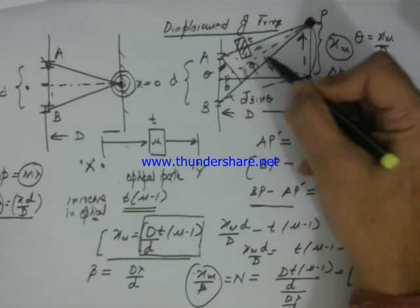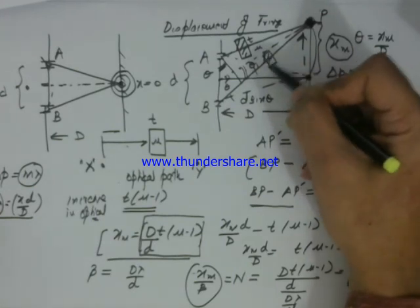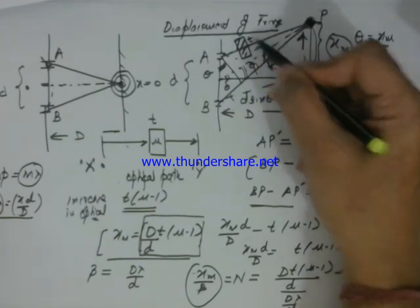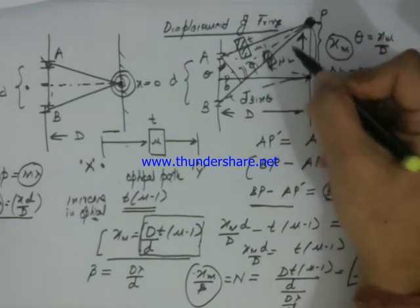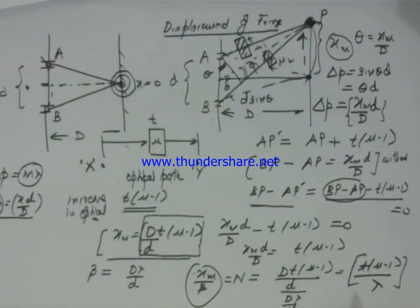You can also have a situation where slab is put in both the paths with thickness t in both and mu 1 and mu 2. We can have a separate lecture on that. This lecture is basically confined to what shift in fringes take place and how do we find out the distance of the shift in fringe.